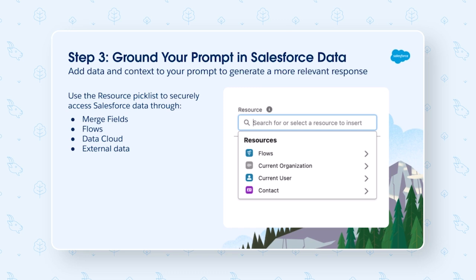Step three is grounding your prompt in Salesforce data. What we're really doing here is adding the relevant data and context to our prompts to generate a more relevant response. You can use the resource pick list in Prompt Builder to securely access Salesforce data through merge fields, flows, Data Cloud, and even your external data. Grounding prompts in your data is what's going to make them so much more valuable for your users and their particular use cases.